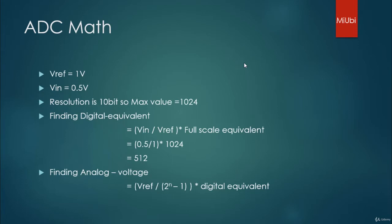Now how would you find an analog value? That is the same - you can do the reverse math. You divide your V reference value by your total values which can come, which gives you the precision of a single bit. You multiply it with the digital equivalent and you get the input voltage.